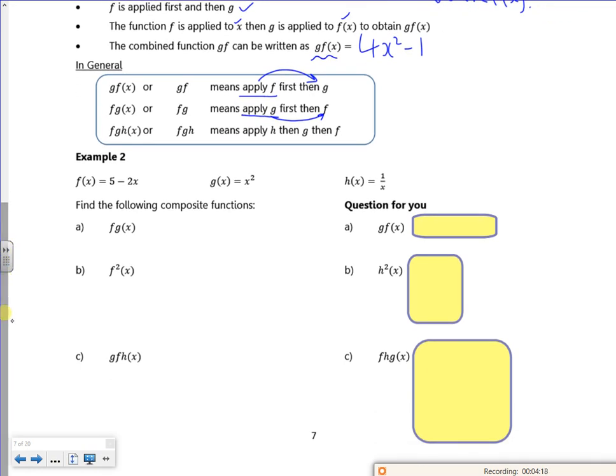So let's have a look at these then. f of g, I've got to put g into f. So my f is 5 minus 2 lots of, I'm sticking g into it, which is x squared. So I get 5 minus 2x squared.